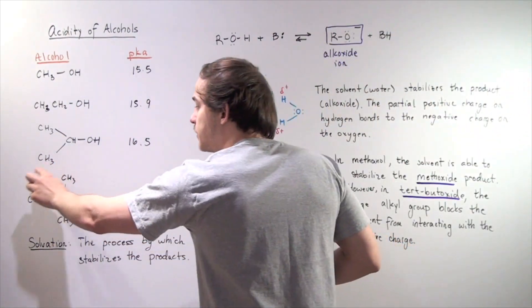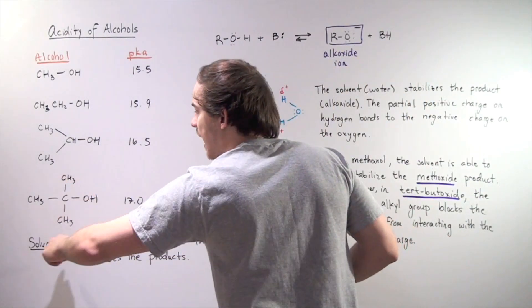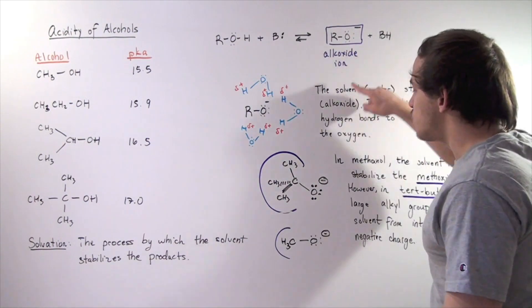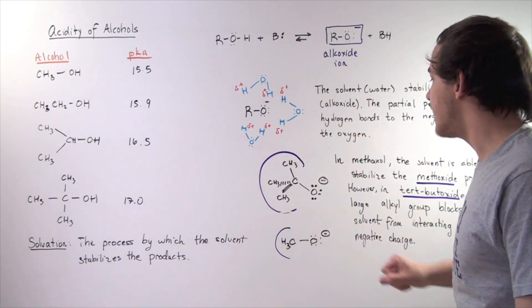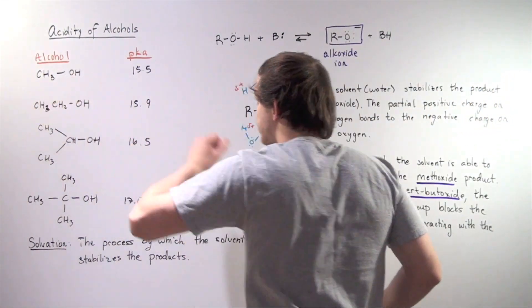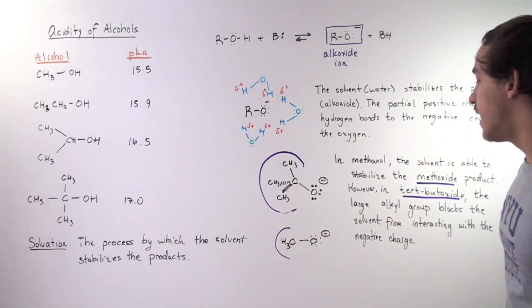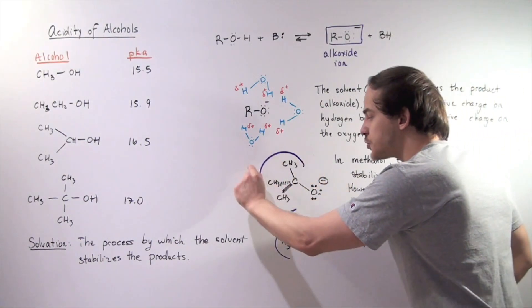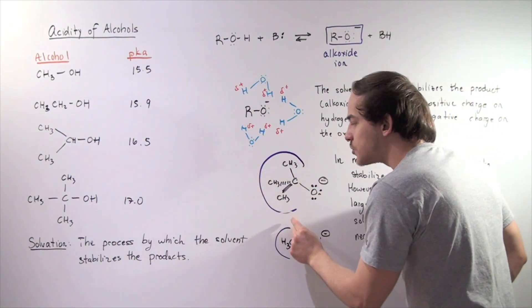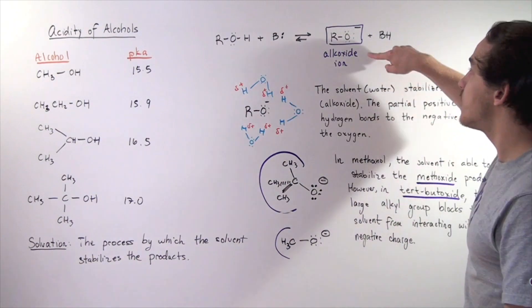Now, let's take our tert-butyl alcohol. Let's suppose the R group is our tert-butyl alcohol. When this reacts with our base, we produce the following alkoxide ion, known as tert-butyl methoxide. Now, when methanol reacts, we produce the following methoxide ion. Notice how much larger this side chain is. This group is very large. And in fact, this group will destabilize the product.